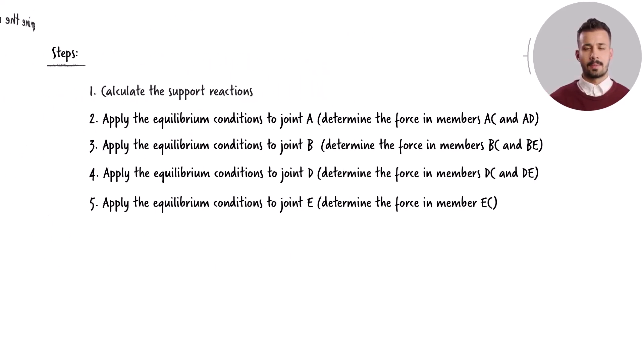Here are the steps for solving the problem. First, we calculate the support reactions. Next, we analyze each joint individually, formulating two equilibrium equations for each. We then solve the equations for the unknown forces at the joint.